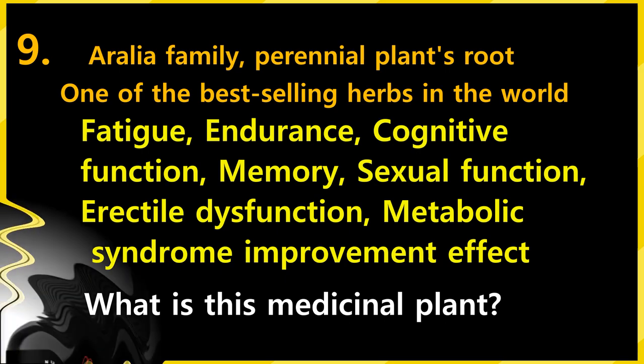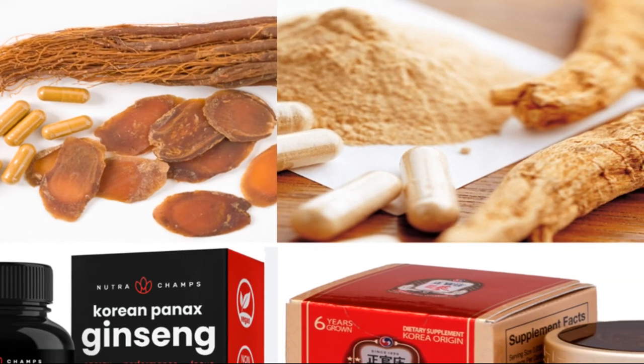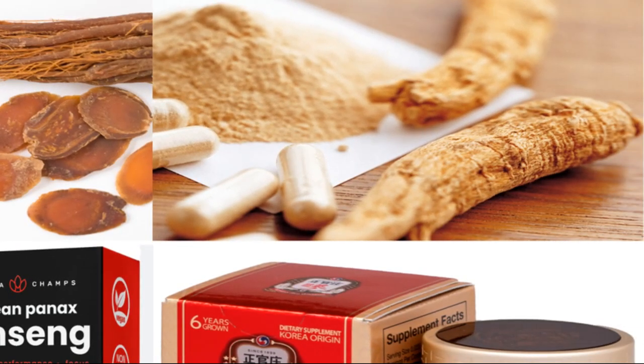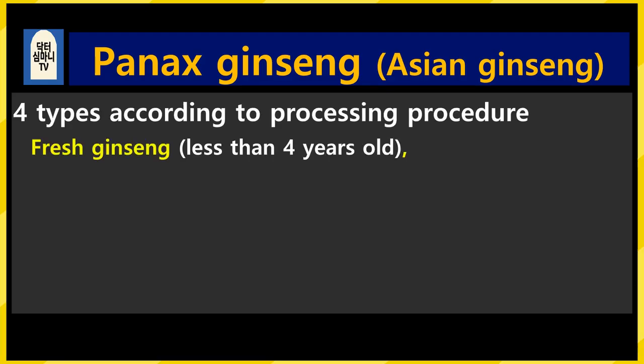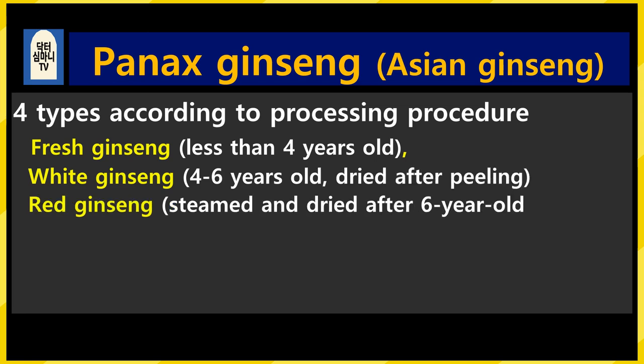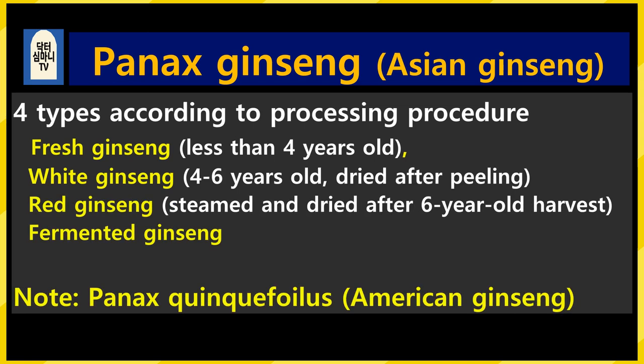What is the name of this plant? It is ginseng. The scientific name of ginseng is Panax ginseng — it is called Asian ginseng and is one of the best-selling herbs in the world. According to the processing procedure, there are 4 types: fresh ginseng (less than 4 years old), white ginseng (peeled and dried, 4 to 6 years old), red ginseng (steamed and dried, 6 years old), and fermented ginseng.